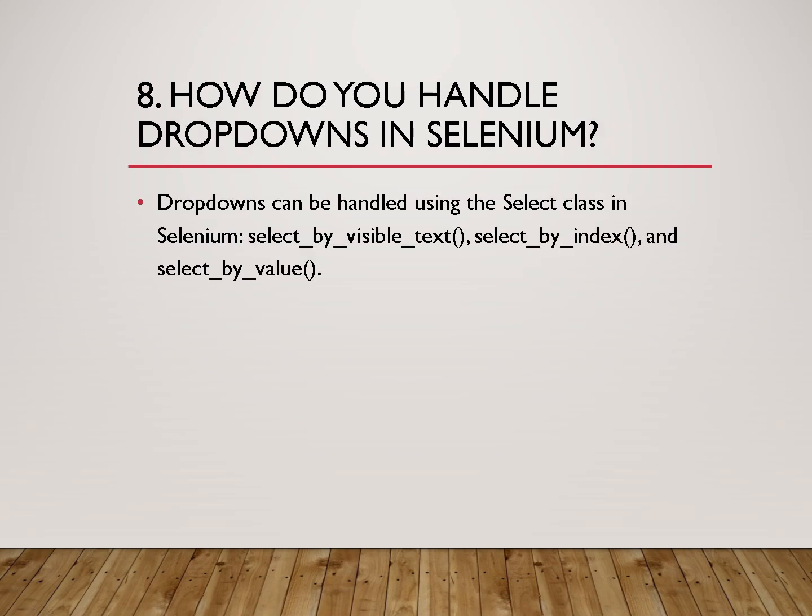The next question is: how do you handle dropdowns in Selenium? We can handle dropdowns using the Select class in Selenium, which provides three methods: selectByVisibleText, selectByIndex, and selectByValue. A pro tip: the interviewer may ask how you handle non-Select dropdowns. In that case, mention that we can use click, sendKeys, or the Actions class to interact with such elements.